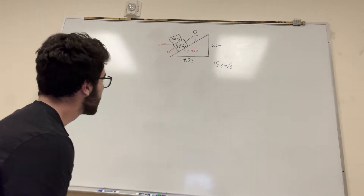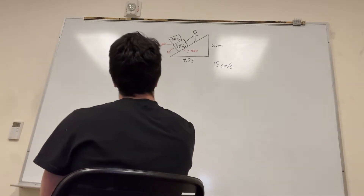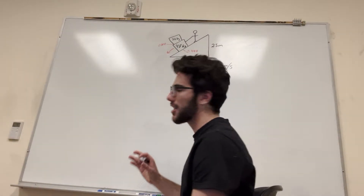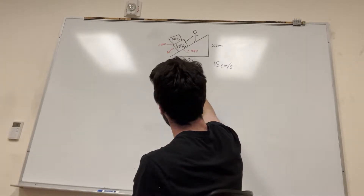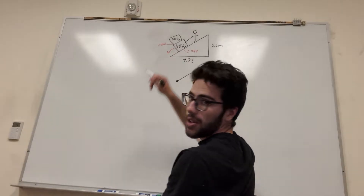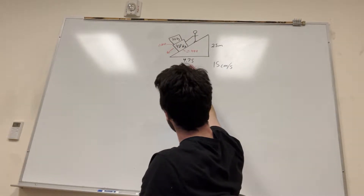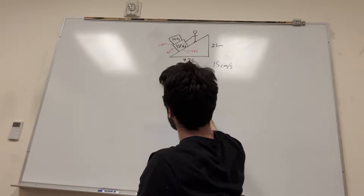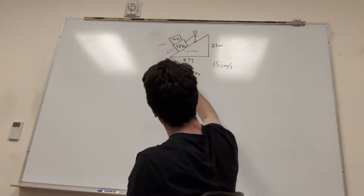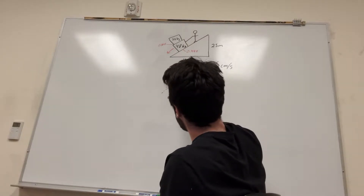We need a free body diagram. Let's make one for the whole system of boxes, assuming they stick together. So you have force applied — force tension — and because you're lowering it down the ramp, friction is going to be going back up, so force friction. The force normal goes perpendicular to the surface and force gravity goes straight down.